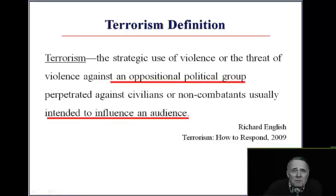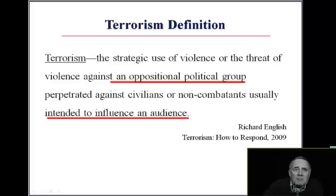So how is terrorism defined? There are actually hundreds of definitions, but here we will use the one by Richard English in 2009. Terrorism is defined as the strategic use of violence or the threat of violence against an oppositional political group, perpetrated against civilians or non-combatants, usually intended to influence an audience. The key here is that the target is civilians or non-combatants.